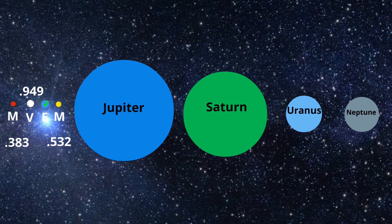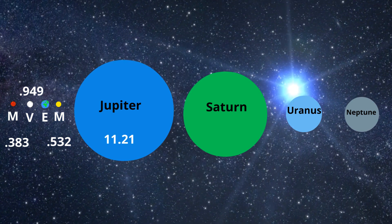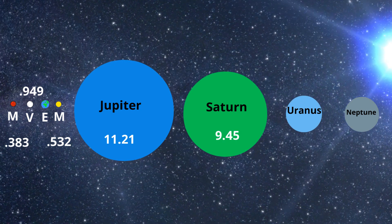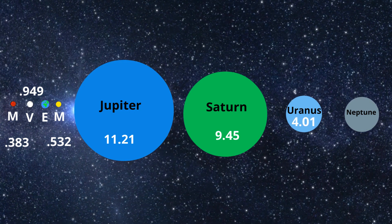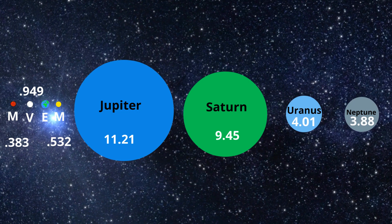Now we move out to the large planets. Jupiter is 11.21 times larger than the Earth. Saturn is 9.45 times larger than the Earth. Uranus is 4.01 times larger than the Earth. And Neptune is 3.88 times larger than the Earth.